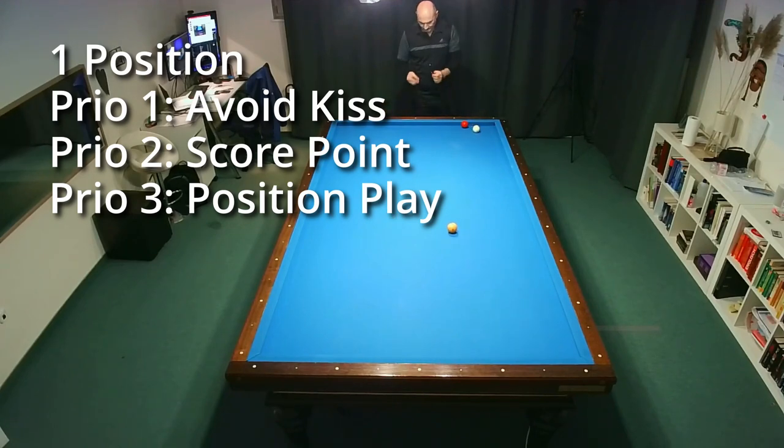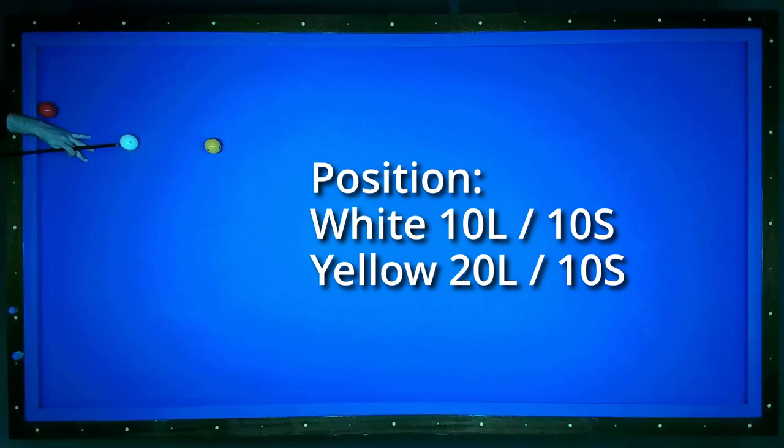The position of the white and yellow balls are simple. Yellow is at 20-10, white is about at 10-10.